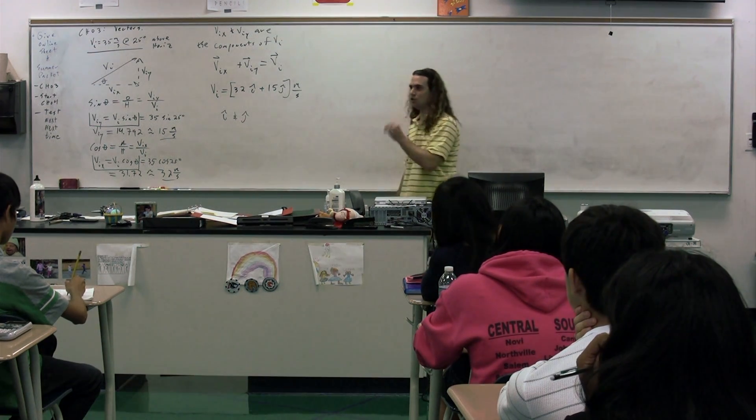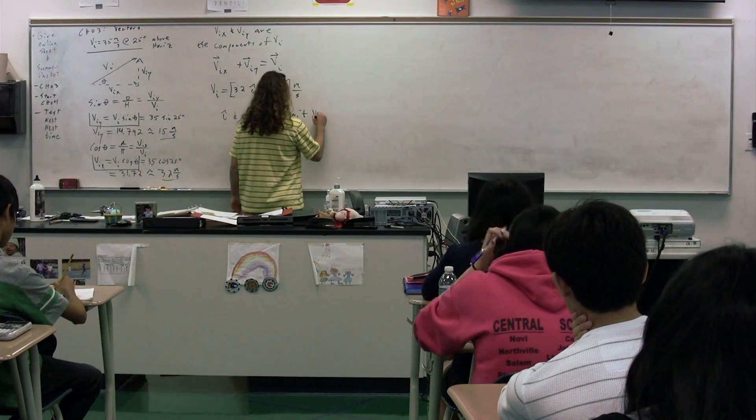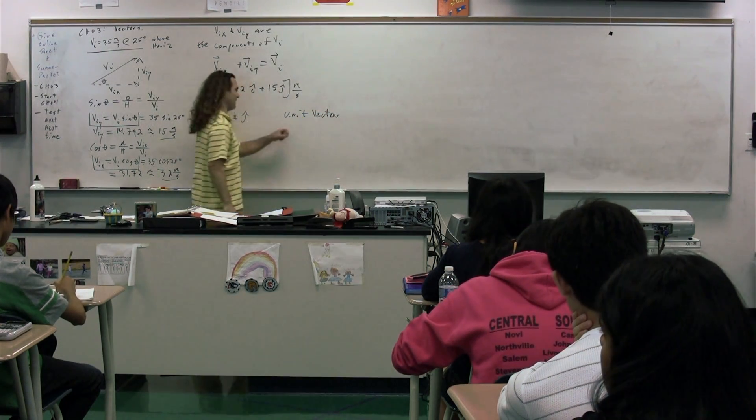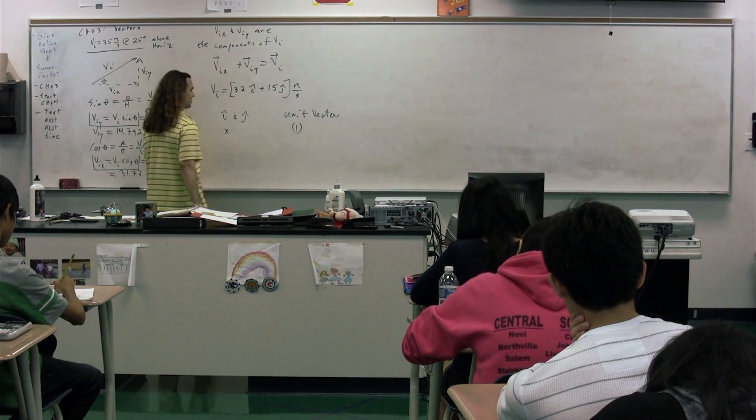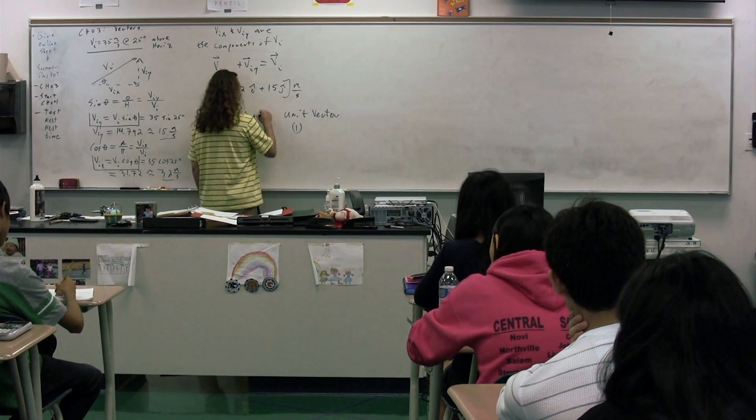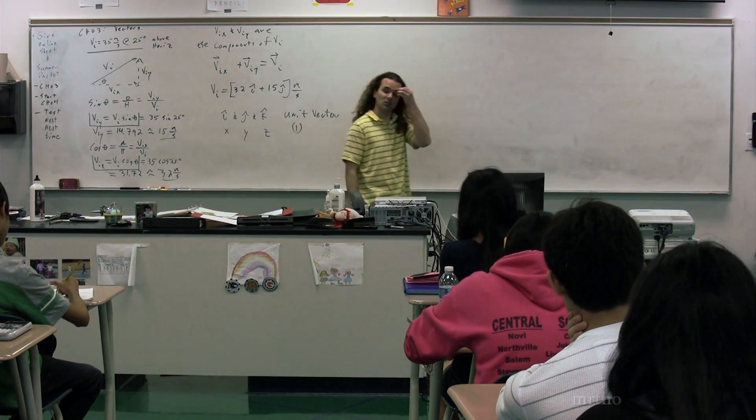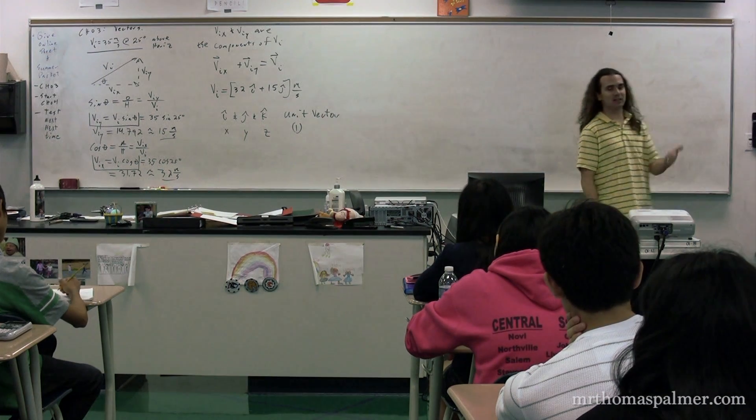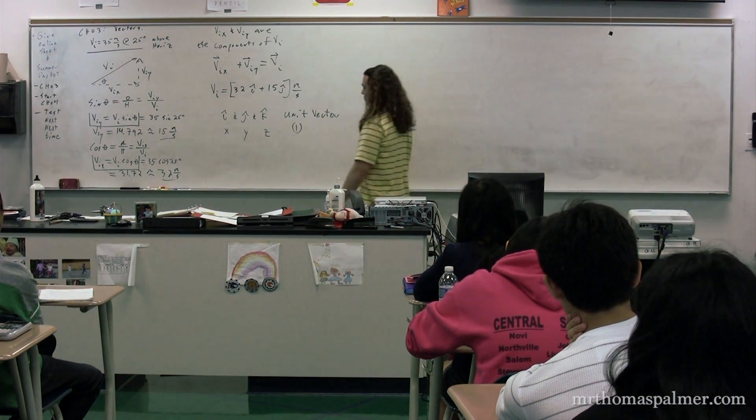So, the i is a unit vector with a value of one in the x direction. The j will be in the y direction. We can also have the unit vector k, which would be in the z direction. So, it is a vector in the x slash y slash z direction and it has a magnitude of one.